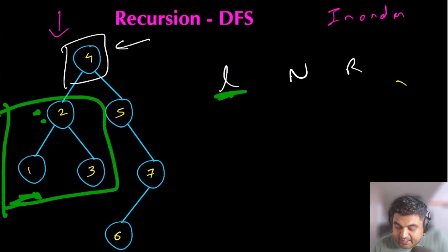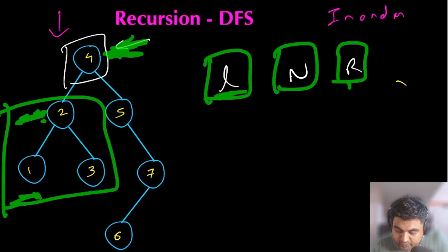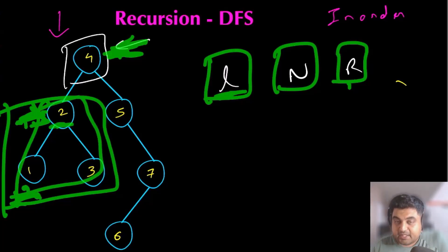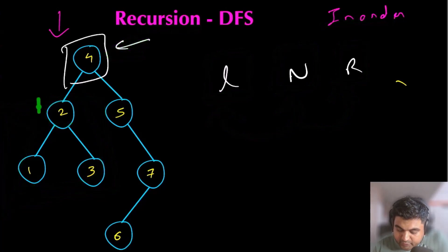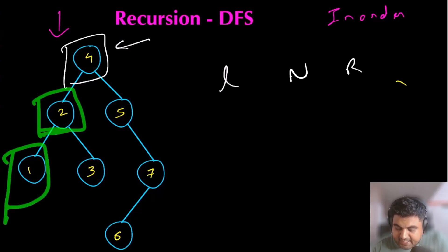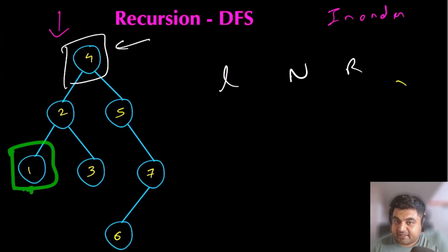For this left subtree, we apply the same logic of left, node, and right. We are going to treat node number two as our root node — as if this entire subtree were a tree on its own. Again, applying in-order traversal, we check whether node two has a left child, and yes, it does — that is node number one. But node number one does not have any other children of its own, so this is going to be our terminating case where we get out of the recursion.